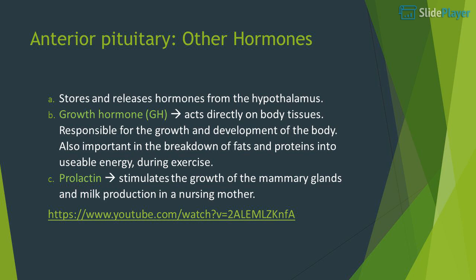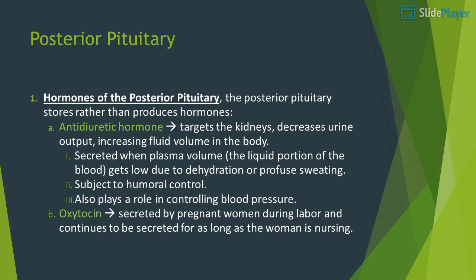Posterior pituitary: the posterior pituitary stores rather than produces hormones. Anti-diuretic hormone (ADH) targets the kidneys, decreases urine output, and increases fluid volume in the body. It is secreted when plasma volume gets low due to dehydration or profuse sweating, and also plays a role in controlling blood pressure. Oxytocin is secreted by pregnant women during labor and continues to be secreted for as long as the woman is nursing.